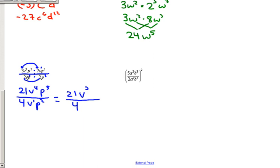Similarly, with p to the fifth over p to the second, 5 minus 2 is 3, so it's also p to the 3.